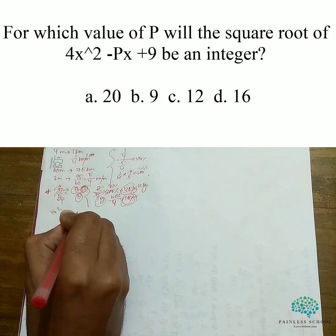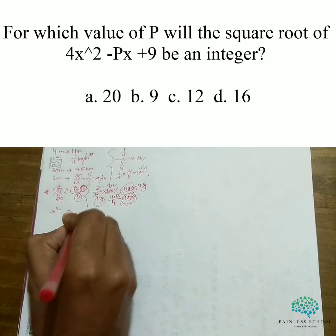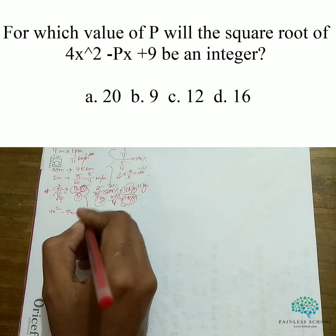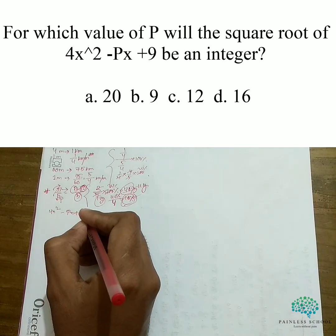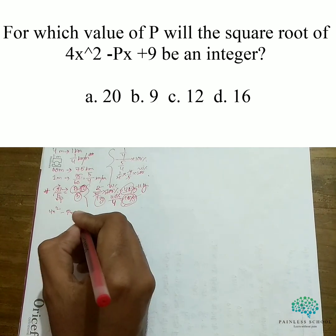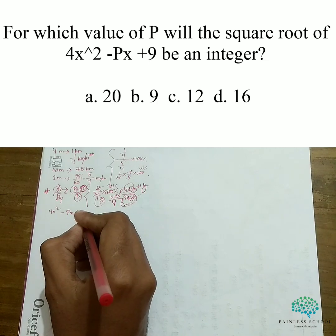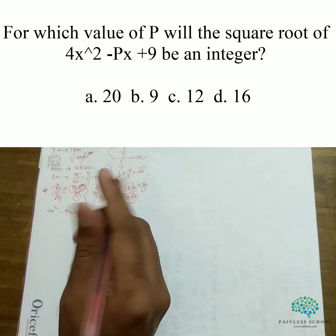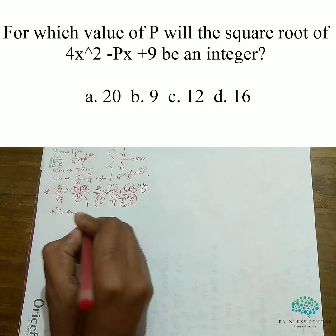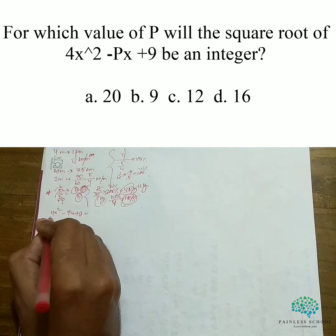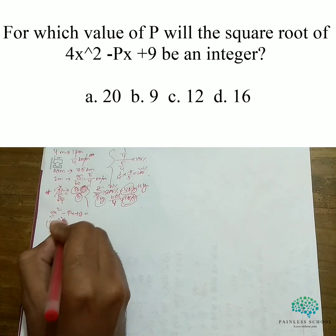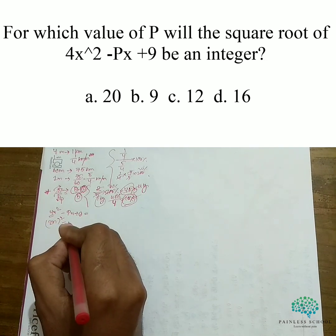Consider the expression 4x² minus px plus 9. The total is a perfect square, meaning it has a square root. It is an integer. The total involves 4x², so the square root term is 2x. We don't know p.